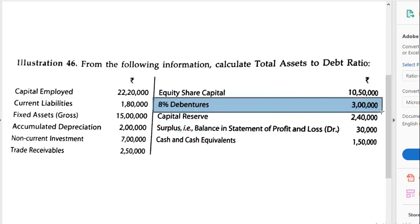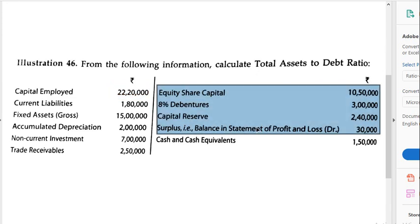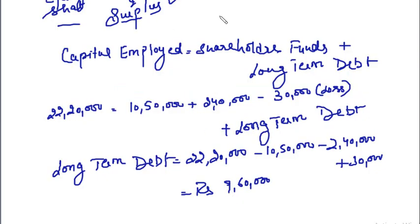This calculation comes to rupees 9 lakh 60,000. The 8% debentures figure of 3 lakhs was given to confuse you. The actual long-term debt is 9 lakh 60,000, and the 3 lakh debentures are already included within this 9 lakh 60,000. Be careful — when capital employed and shareholders' funds are both given, calculate the long-term debt from there rather than picking up an individual figure.